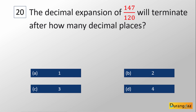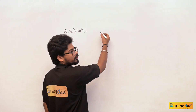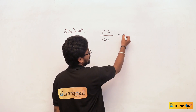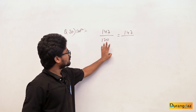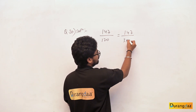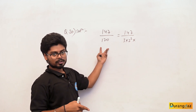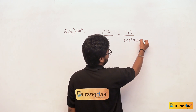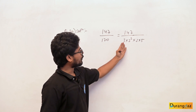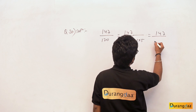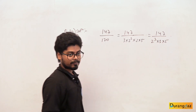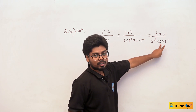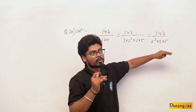Question number 20: The decimal expansion of 147/120 will terminate after how many places of decimals? First, we find the prime factorization of 120: 120 = 2³×3×5. So 147/120 = 147/(2³×3×5). Since there is a factor of 3 in the denominator, we check if 147 is divisible by 3. The digit sum is 1+4+7=12, which is divisible by 3, so yes.